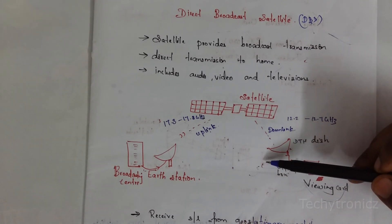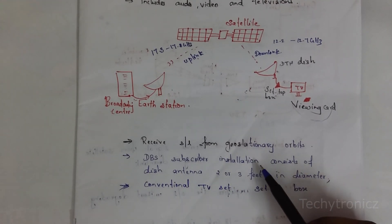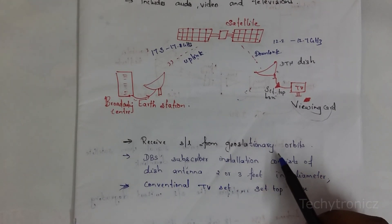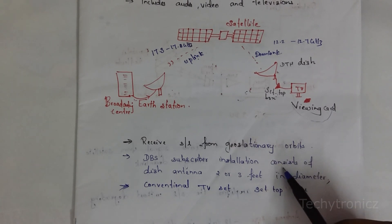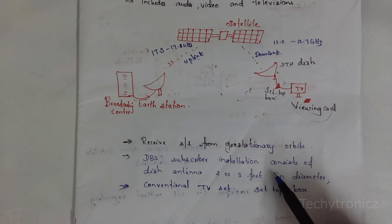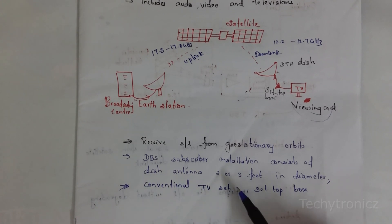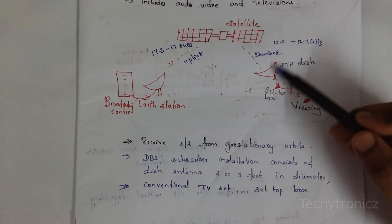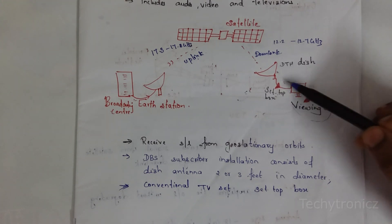DBS receives signals from geostationary orbits — the orbital path which rotates around the earth, at a greater distance than LEO and MEO. The DBS subscriber installation consists of a dish antenna which is two to three feet in diameter, a conventional set-top box, and a conventional TV.